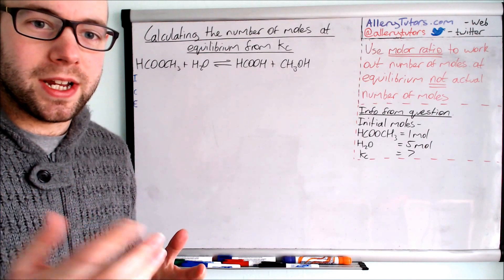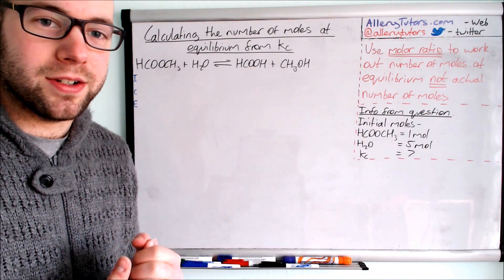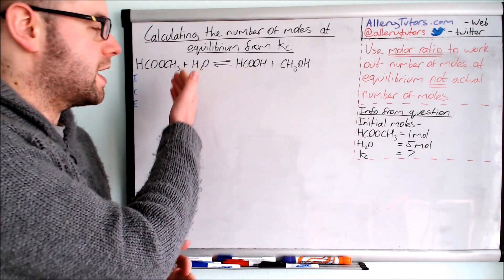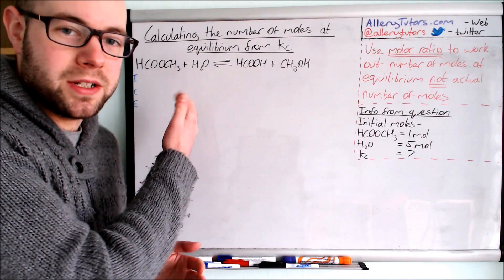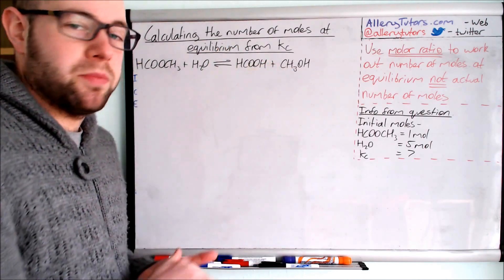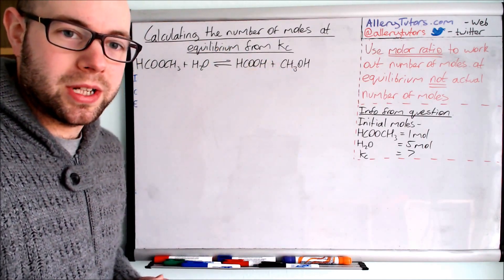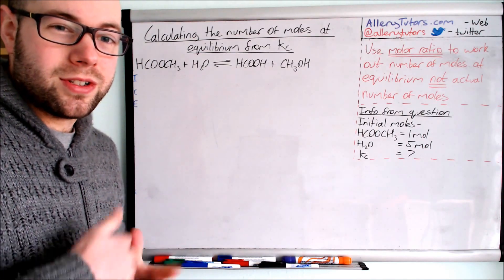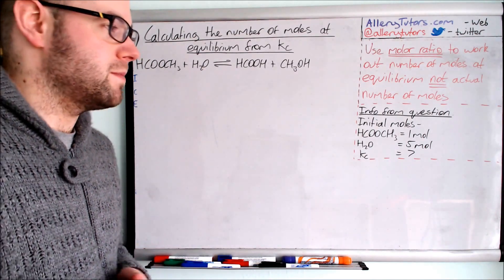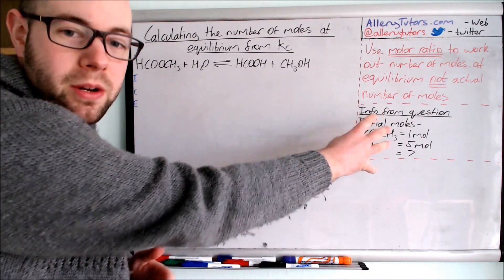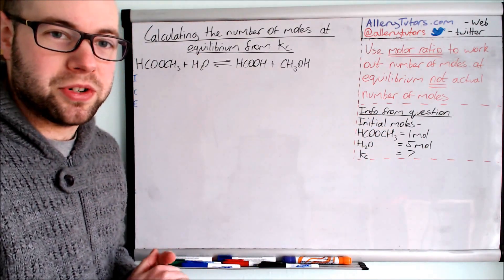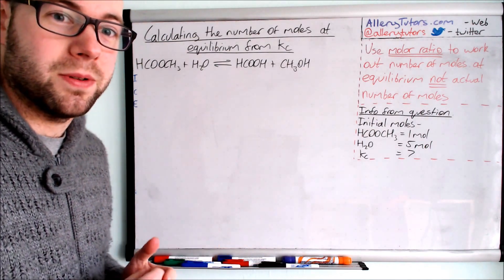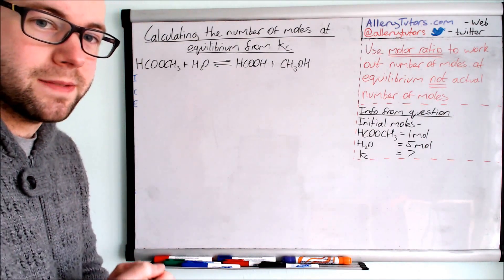So what we've got is an equation here — this is just hydrolysis of an ester. We've got our ester reacting with water to produce a carboxylic acid and an alcohol. We're going to go through it step by step using the information from the question. I've cut the actual question out because I want to emphasize the maths and the process behind it.